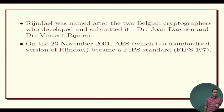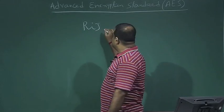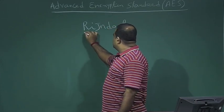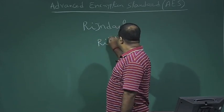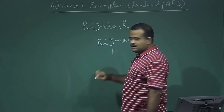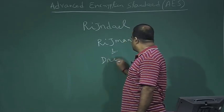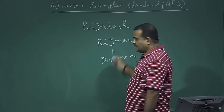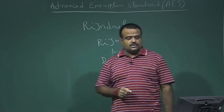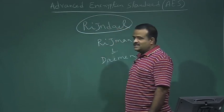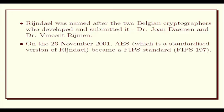Rijndael became the Advanced Encryption Standard. The name Rijndael comes from the names of the two Belgian cryptographers who designed this cipher: Joan Daemen and Vincent Rijmen. Based on their names, they proposed the name Rijndael. This was standardized by NIST in 2001 and is still the standard for block ciphers today.